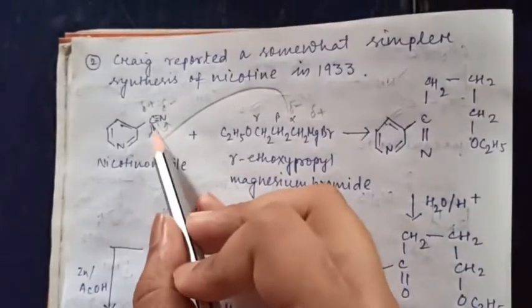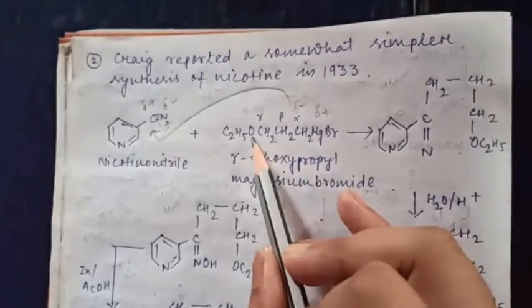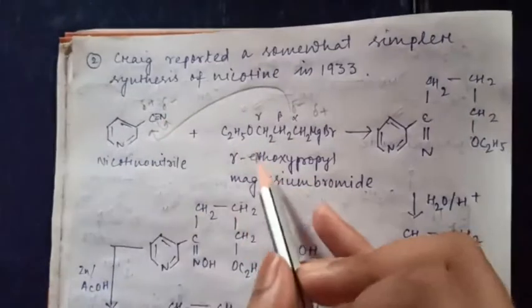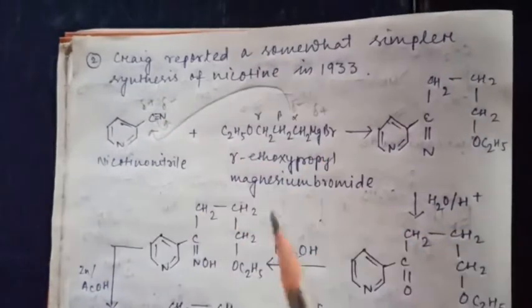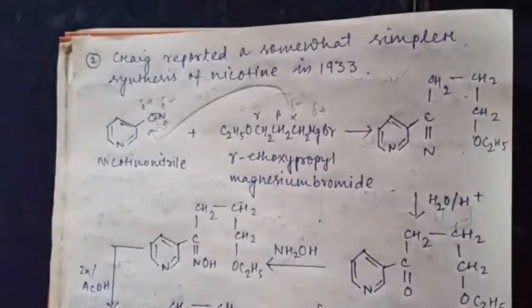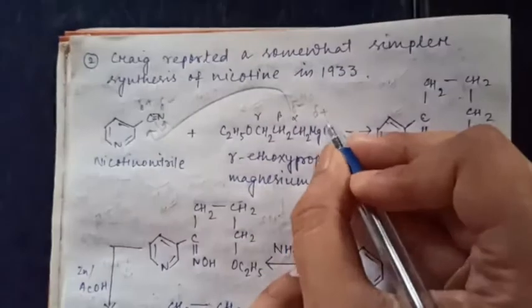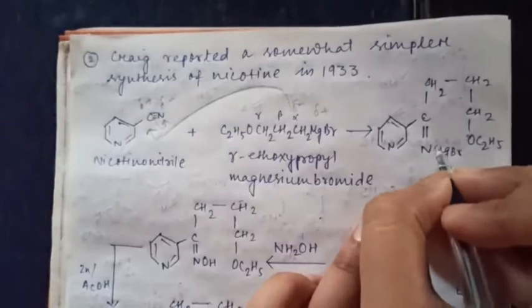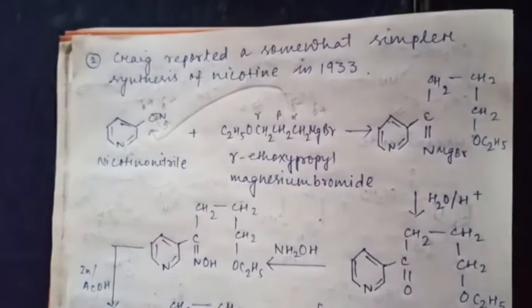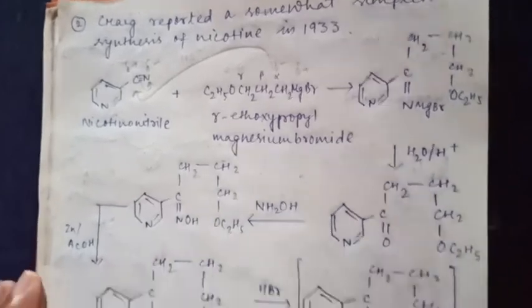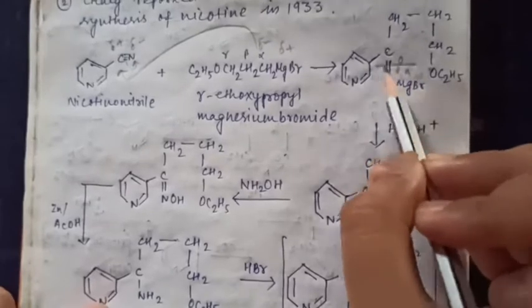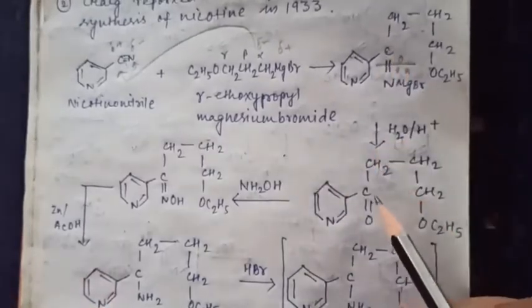The product has a C=N bond, and the carbon chain is CH2CH2CH2. Nitrogen carries the MgBr part as the negative component. When we perform hydrolysis, this MgBr part is removed, OH is introduced, and the imine hydrolyzes to convert C=N to C=O.